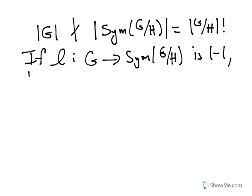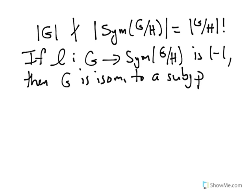then since L is a homomorphism and L is one-to-one, that means G is isomorphic to a subgroup of sym G mod H.